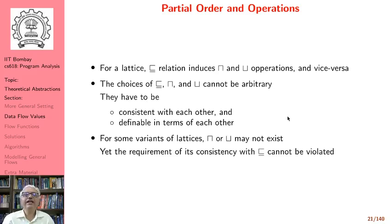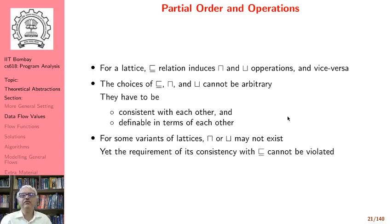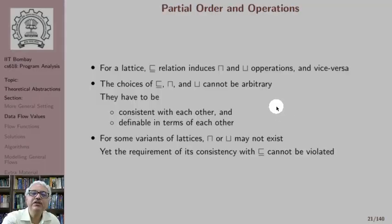It is important to note that for a lattice, the weaker-than relation or the partial order relation induces the meet and join operations, and vice versa. This means the selection of partial order, meet, and join operations must be consistent with each other and should be definable in terms of each other. Note that if we have just a partially ordered set but not a lattice, then we may not have join and meet operations.